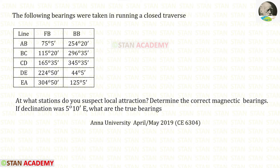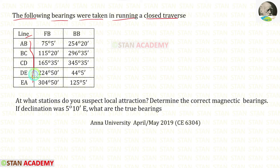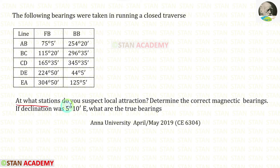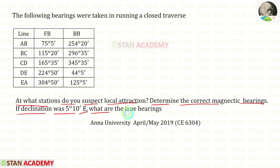Hello everyone. Today we are going to do a problem based on compass surveying. Let us read the question. The following bearings were taken in running a closed traverse. Lines are given, four bearings are given and back bearings are given. At what stations do you suspect local attraction? Determine the correct magnetic bearings. If declination was 5 degrees 10 minutes east, what are the true bearings?